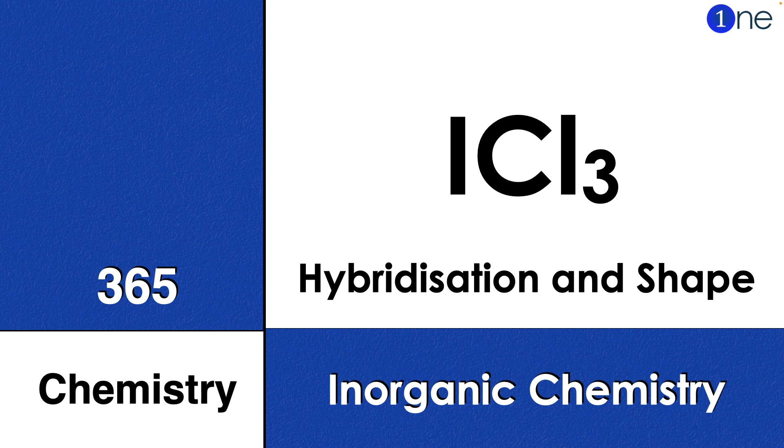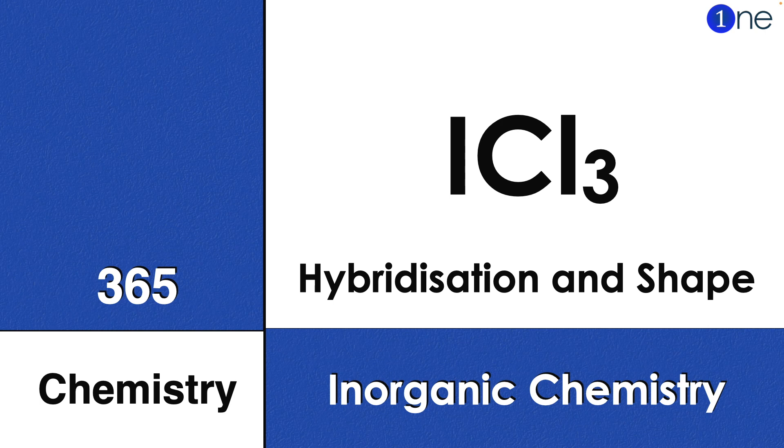Welcome to One Chemistry. This is 365 Chemistry Series, Inorganic Chemistry questions for you. Here you go: iodine trichloride, ICl3. You should find hybridization and shape of it.